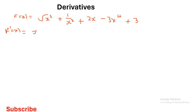For the first term — the square root of x cubed — we must first remove the square root. That means it becomes x to the power of 3 over 2 (the exponent 3 divided by the index 2). For the second term, 1 over x cubed becomes x to the power of negative 3. Leave the remaining terms for now.